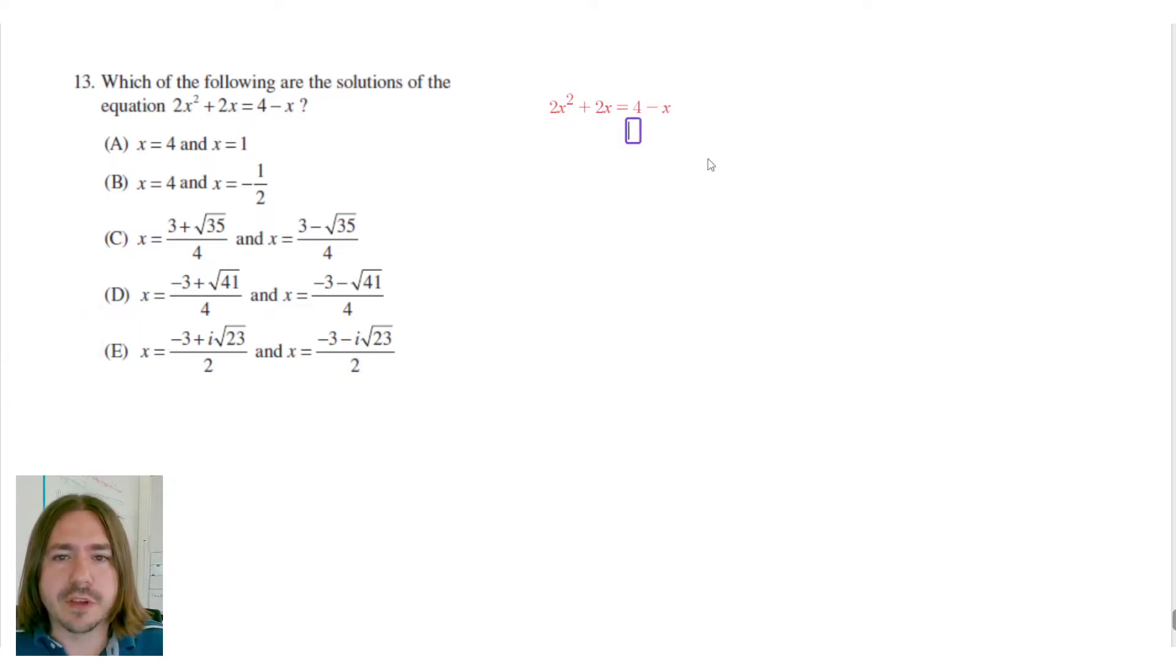So I can do that by subtracting 4 from either side and also adding x. So I'm going to do this to both sides of the equation. Basically I'm kind of doing two steps in one here.